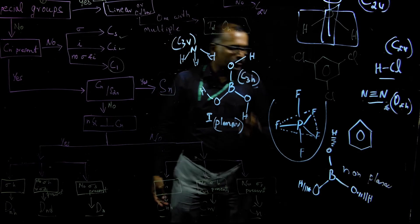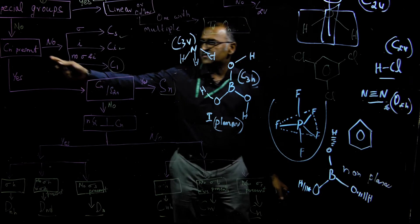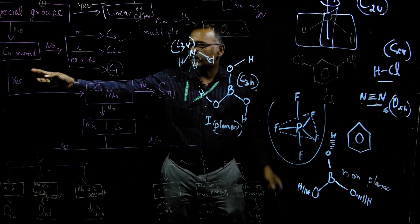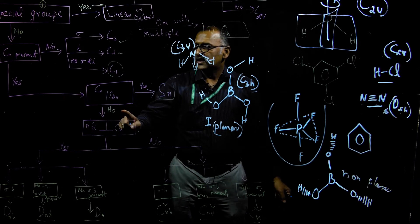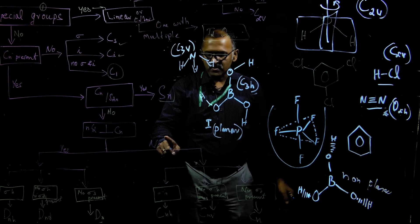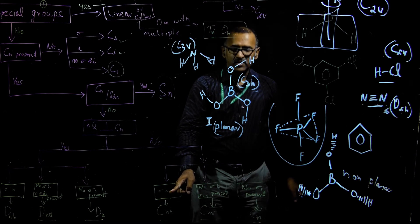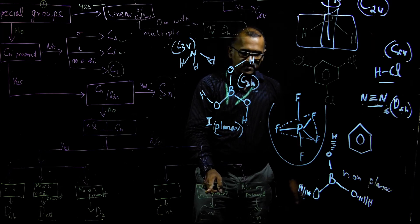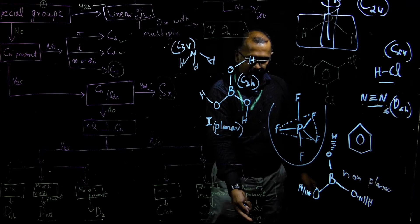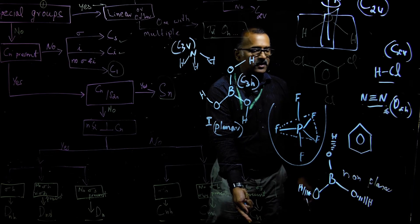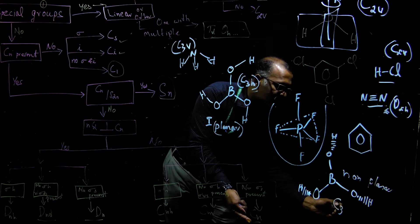For non-planar boric acid, the analysis is the same up to the sigma check. The Cn (C3) is present, no S2n, no nC2 perpendicular to Cn. But now there is no sigma H and no sigma Vs — no planes of symmetry at all. Therefore the point group of non-planar boric acid is simply C3.